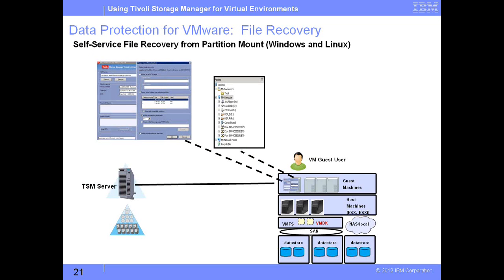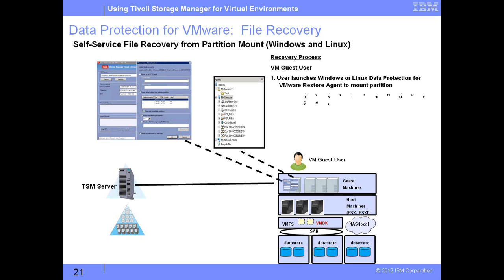Coming to slide number 21, in the earlier slide we saw how to restore a full VM from backups. In this slide, we are looking at how to use the data protection for VMware recovery agent to perform a file-level recovery. For this process, we need to be a VMware guest user inside the guest machine. We launch the Windows or Linux data protection for VMware restore agent, which needs to be installed inside each guest machine.